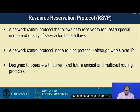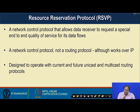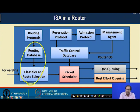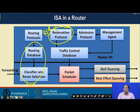Let us look into the Resource Reservation Protocol. RSVP is a network control protocol that allows a data receiver to request a special end-to-end quality of service for its data flow. Remember that RSVP is a network control protocol and not a routing protocol — it works in association with IP. It is designed to operate with current and future unicast and multicast routing protocols. The routing control protocol takes care of routing, and the RSVP runs alongside it to take care of resource reservation at individual routers.